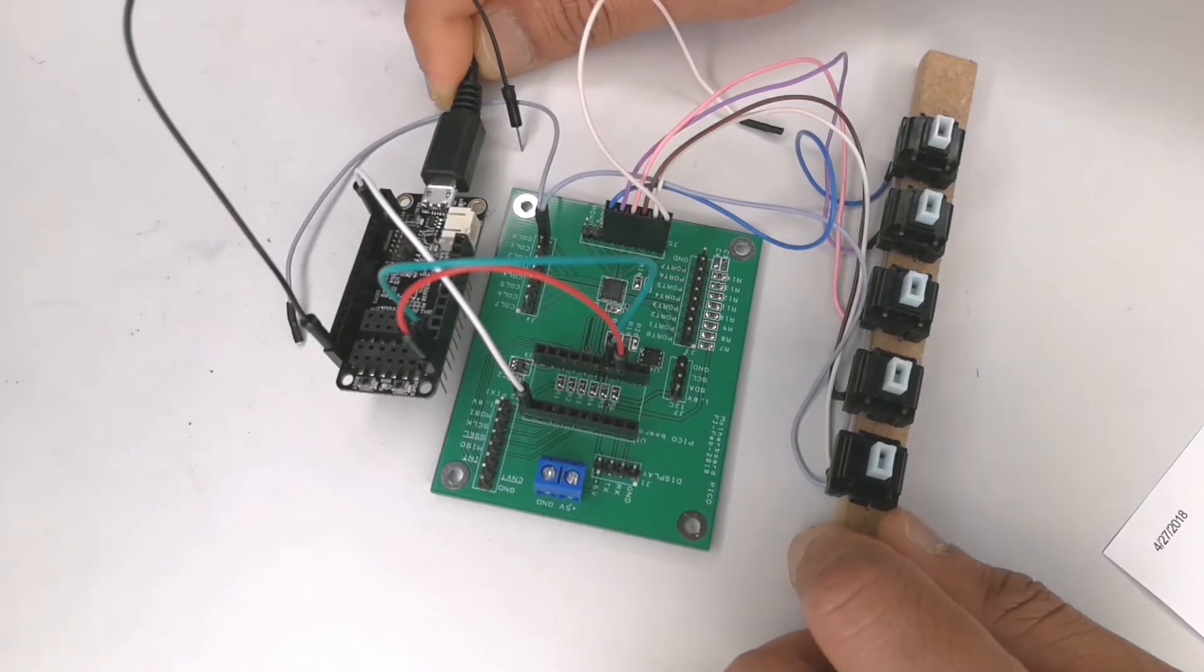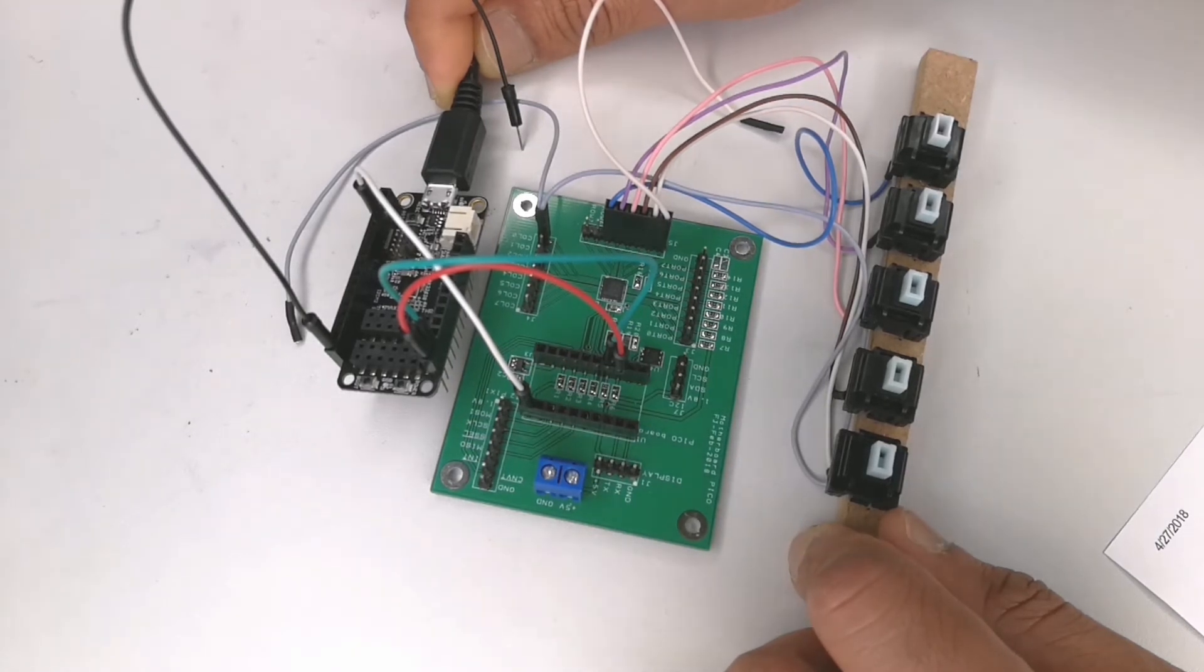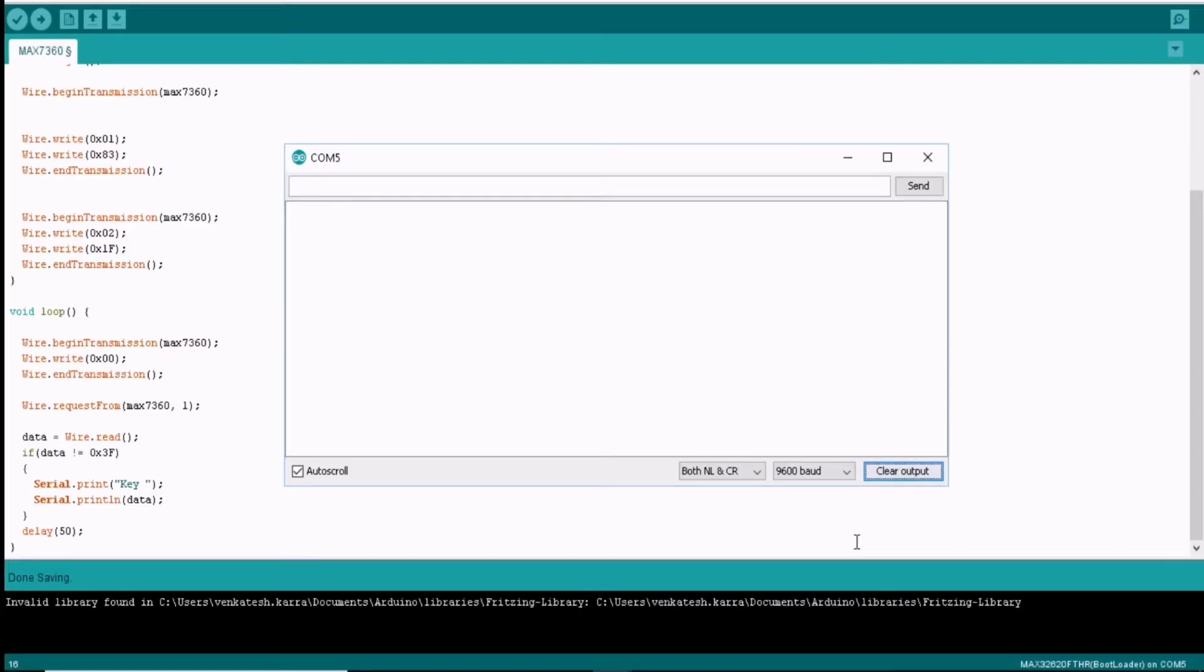Here I have a sample setup of the schematic I have shown you earlier with five key switches. I have programmed the feather board with the code I have just shown and the output can be seen on the terminal. Here you can see the terminal displays the number of the key switches that is pressed.